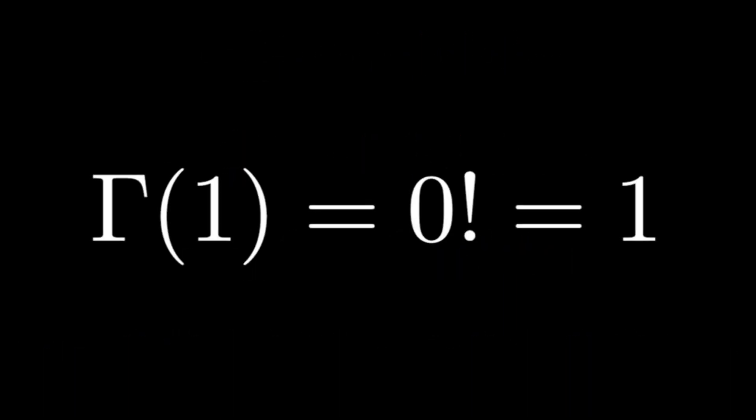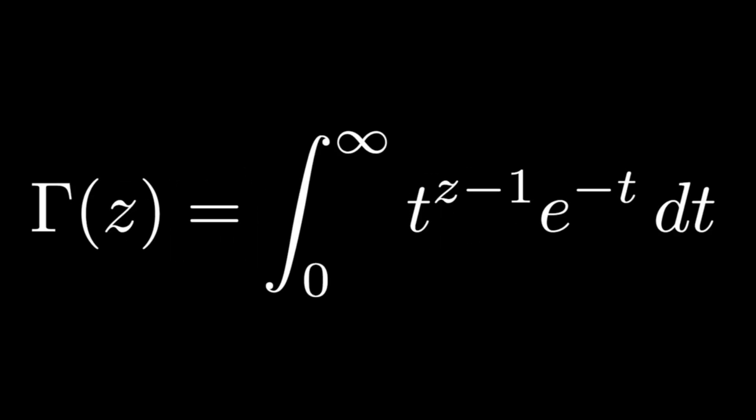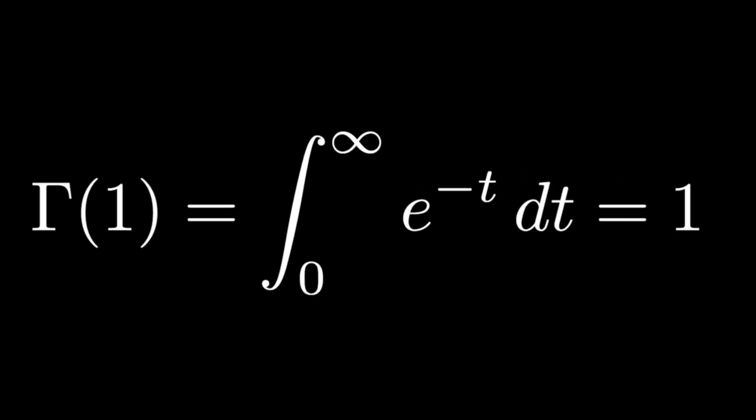Finally, this definition is consistent with the gamma function, which generalizes factorials to non-integer values. To remain continuous, the gamma function must assign the value 1 to 0 factorial. The gamma function is defined by this improper integral. When you plug in a real number for z, it evaluates the area under this curve, which behaves similarly to a factorial. When z equals 1, this becomes the integral of e to the negative t from 0 to infinity, which is 1.